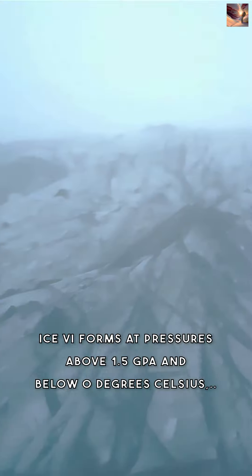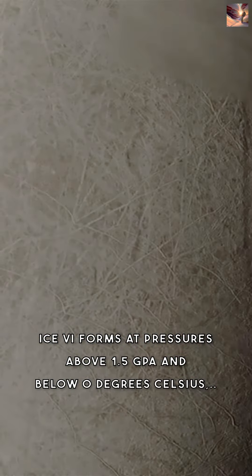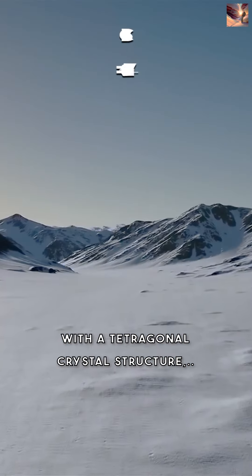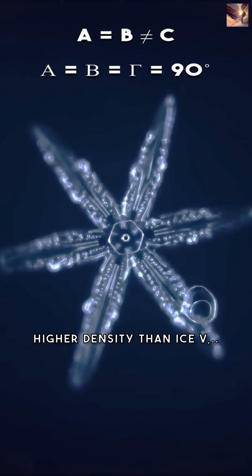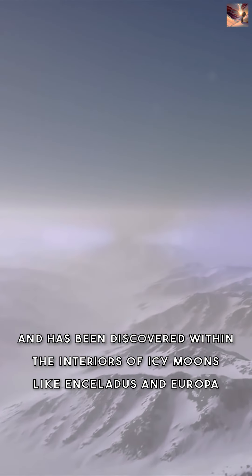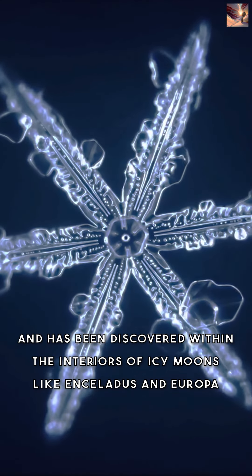Ice 6 forms at pressures above 1.5 gigapascals and below 0 degrees Celsius, with a tetragonal crystal structure and higher density than ice 5. It has been discovered within the interiors of icy moons like Enceladus and Europa.